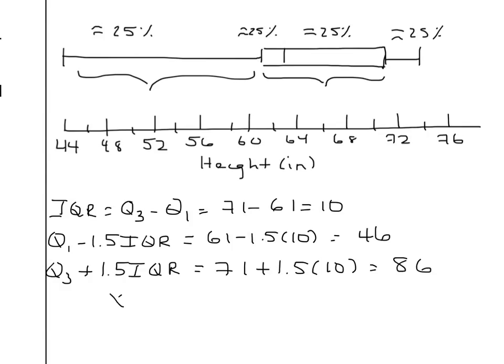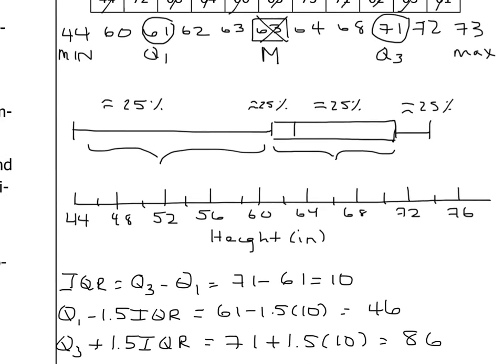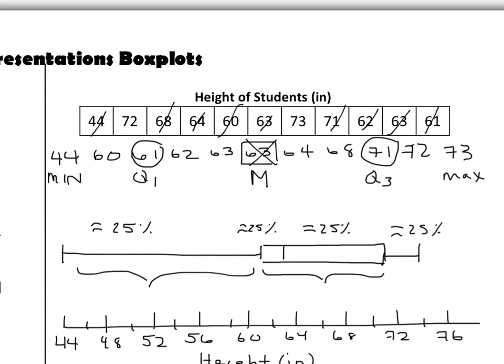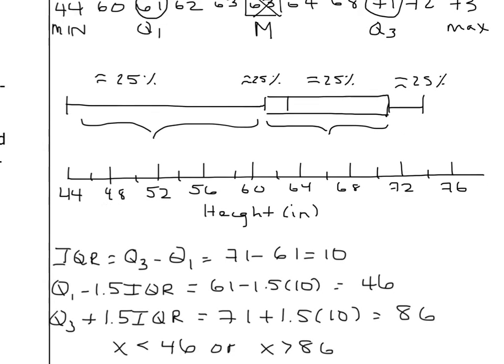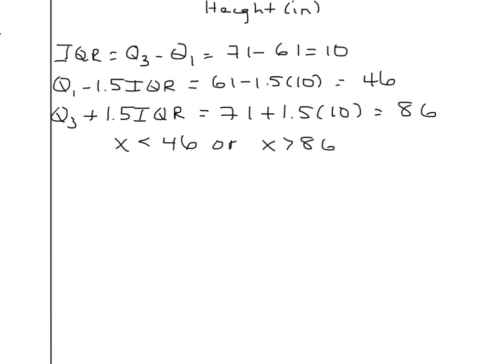So any data value in our data set that is less than 46 or greater than 86 would be considered an outlier. So let's go back to our data set. Do we have a value that is fulfilling either of those inequalities? Yes, we definitely do. 44 in this case is considered an outlier.